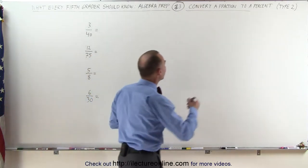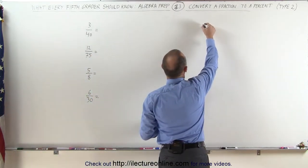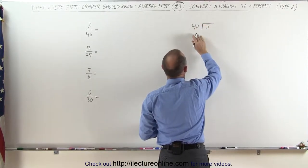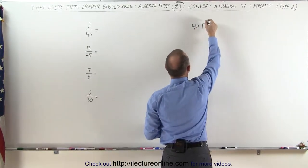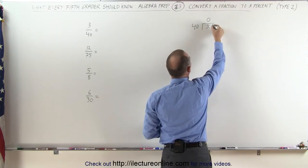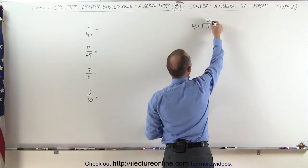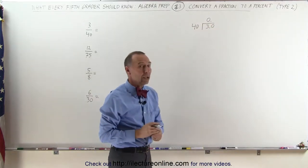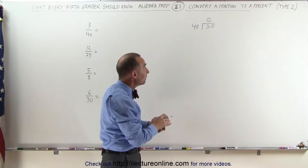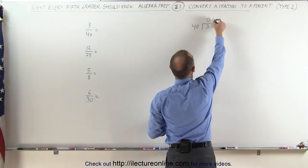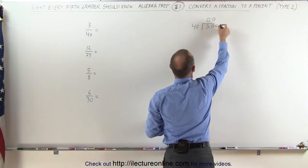We take the number 3 and we divide it by 40. First of all, 40 does not go into 3, so we put a 0 there and then put a decimal place here and add a 0. If we put a decimal place there we must put a decimal place there as well. Now does 40 fit into 30? It still doesn't fit into 30, so we put a 0 there and we add another 0.